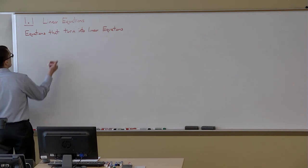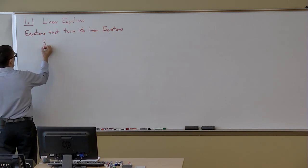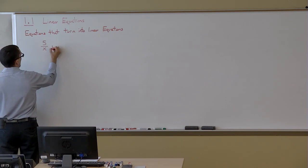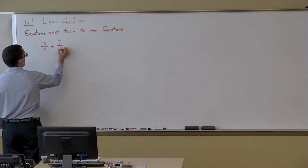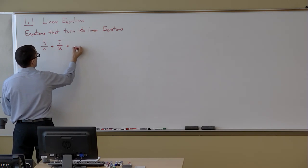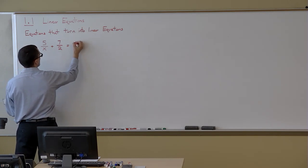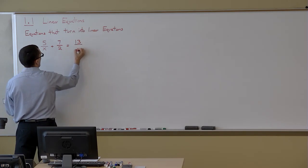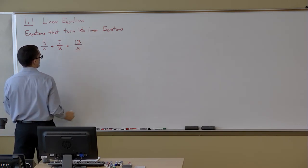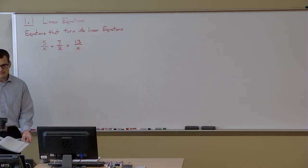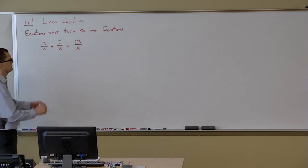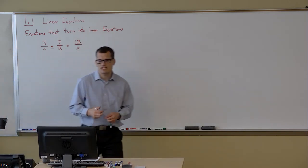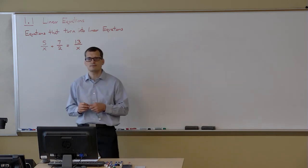Let's start with a straightforward one: 5 over x plus 7 halves equaling 13 over x. This is a rational equation — polynomial divided by polynomials, we have rational expressions going on.